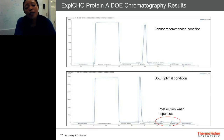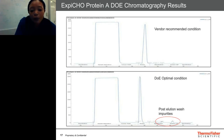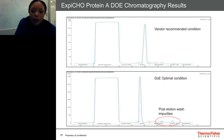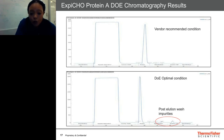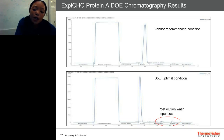Here we see the protein A chromatogram showing what that impurity peak is. Looking at the top chromatogram showing the vendor recommended condition, the peak is a little more broadened compared to the D-optimal condition where you get a really nice sharp peak. When you look at the post-elution wash impurities you see two peaks — it's really that first peak that was characteristic of the single component causing the yellow color. Also, when we do a system clean-in-place we get more removal of the overall impurities stuck on the column.